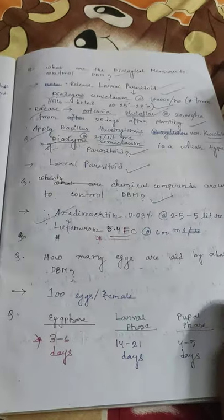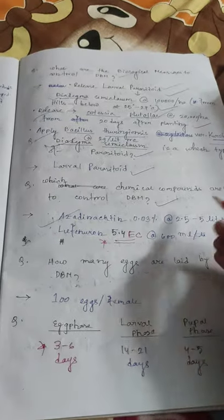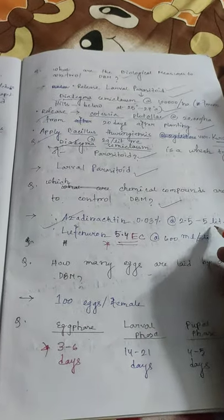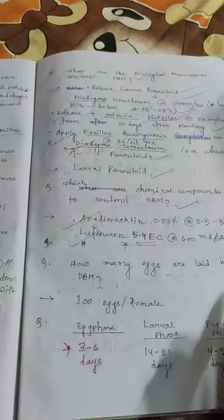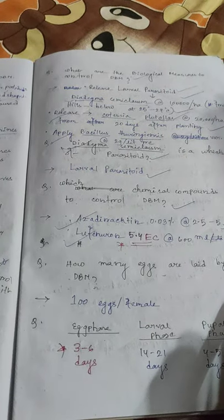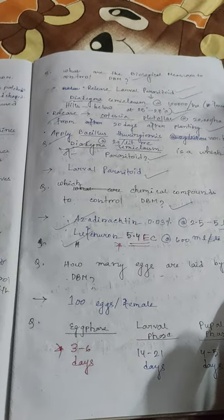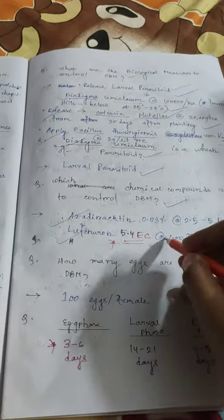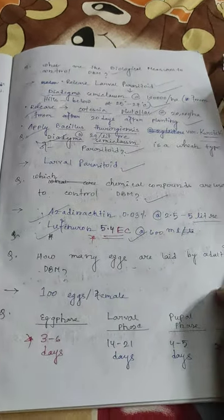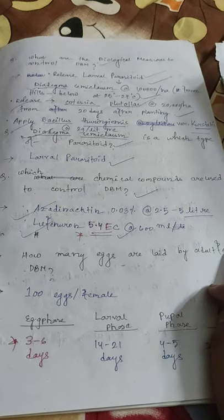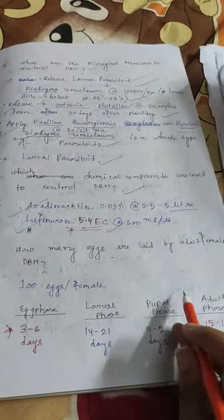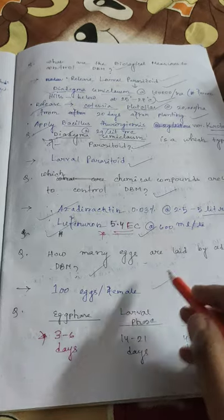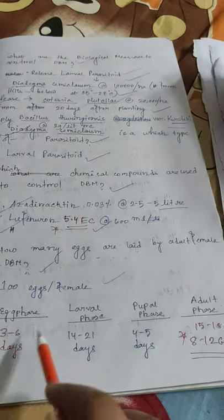Chemical compounds used to control DBM: Azadirachtin 0.03% at the rate of 2.5 to 5 litres per hectare, and Lufenuron 5.4 EC at the rate of 600 ml per hectare. Adult female Diamond Black Moth lays about 100 eggs per plant.